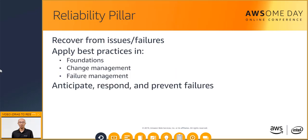The reliability pillar focuses on the ability of a system to recover from infrastructure or service failures. It also focuses on the ability to dynamically acquire compute resources to meet demand and mitigate disruptions. Reliability is there to assist in the ability to recover from failures and meet demand. Reliability in the cloud is composed of three areas: foundations, change management, and failure management. Your architecture and system must have well-planned foundations in place that can handle changes in demand or requirements, and also detect failure and automatically self-heal.